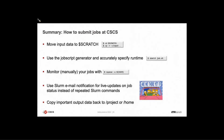To summarize how to submit jobs at CSCS: move your data to scratch, accurately specify the runtime, and if you want to observe job status manually use 'squeue'. Rather than polling constantly, let the system notify you when your job starts or finishes via email. Finally, don't forget to copy important output data back to project or home, otherwise you might lose it if you leave it on scratch.